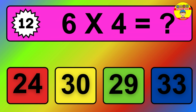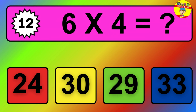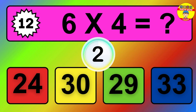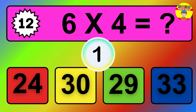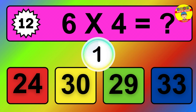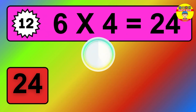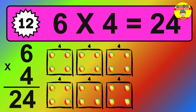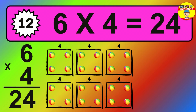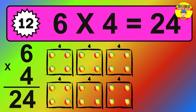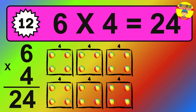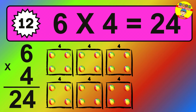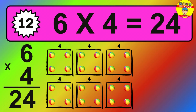Question twelve: six times four equals what? The answer is: six times four is 24. To calculate, we have six groups with four balls each one. So how many balls do we have? 24 balls.